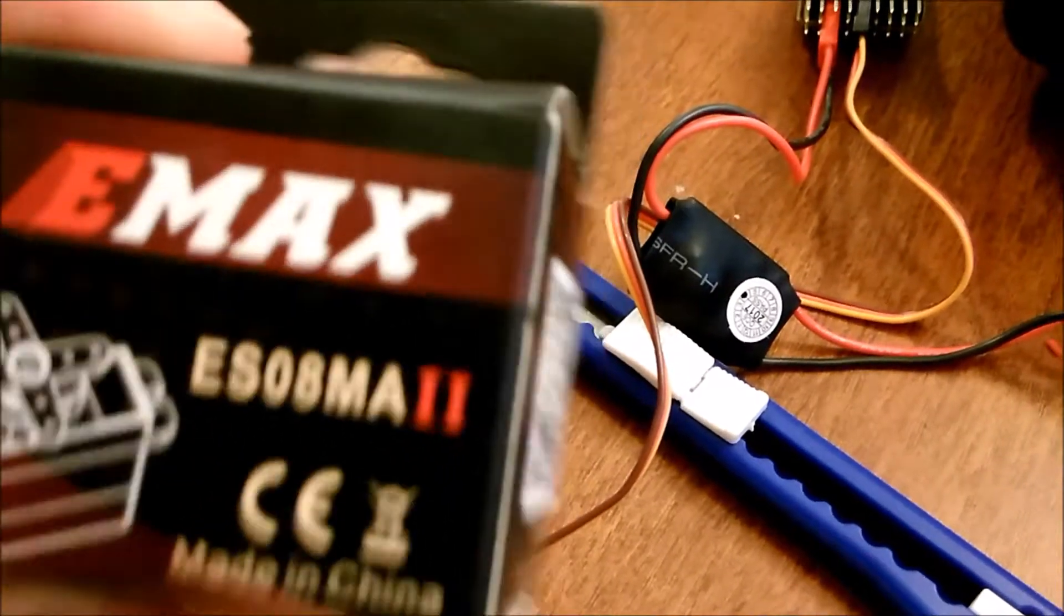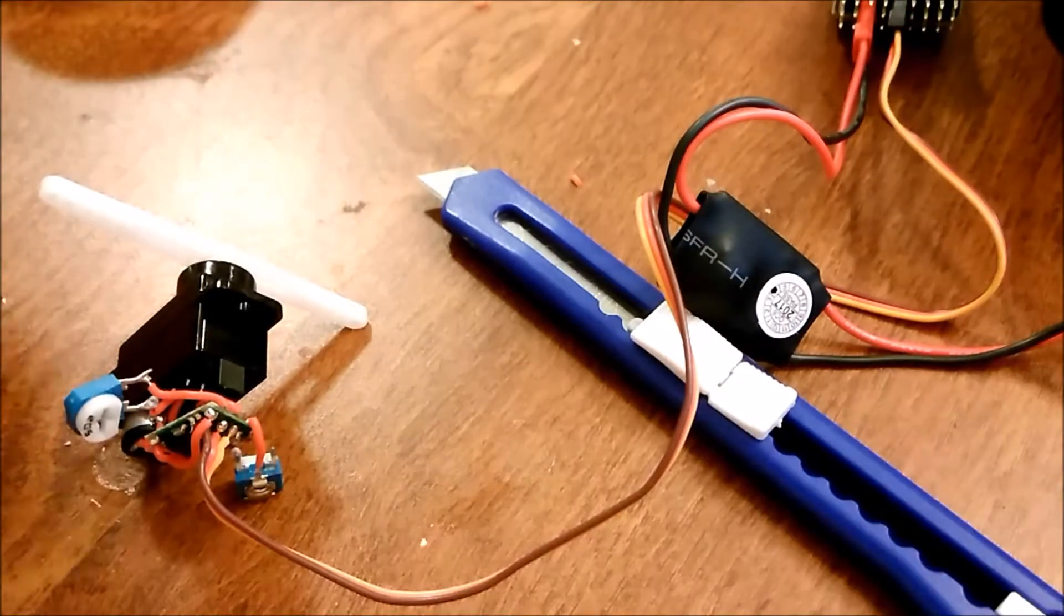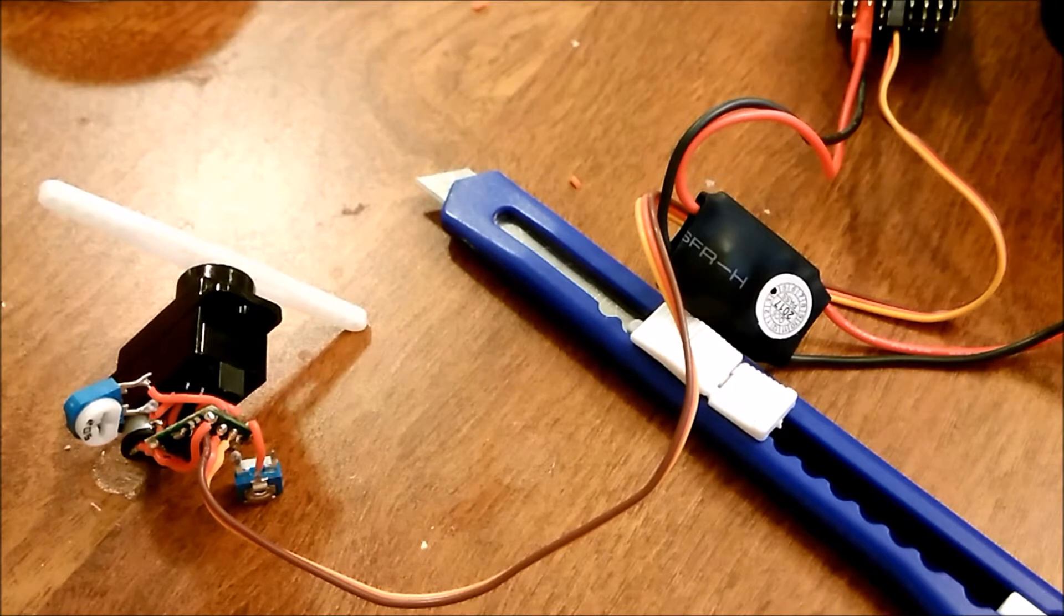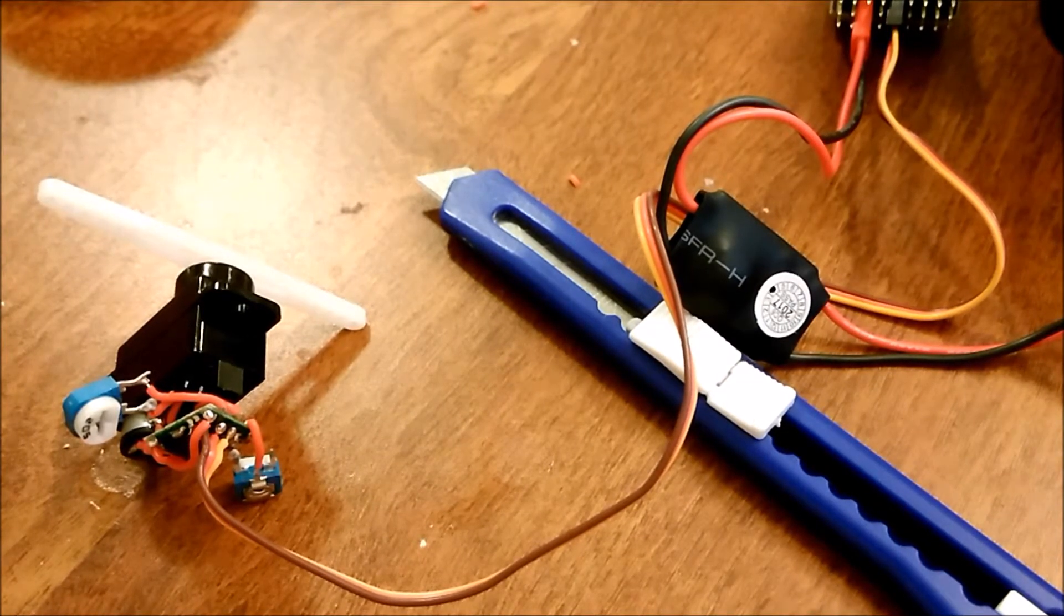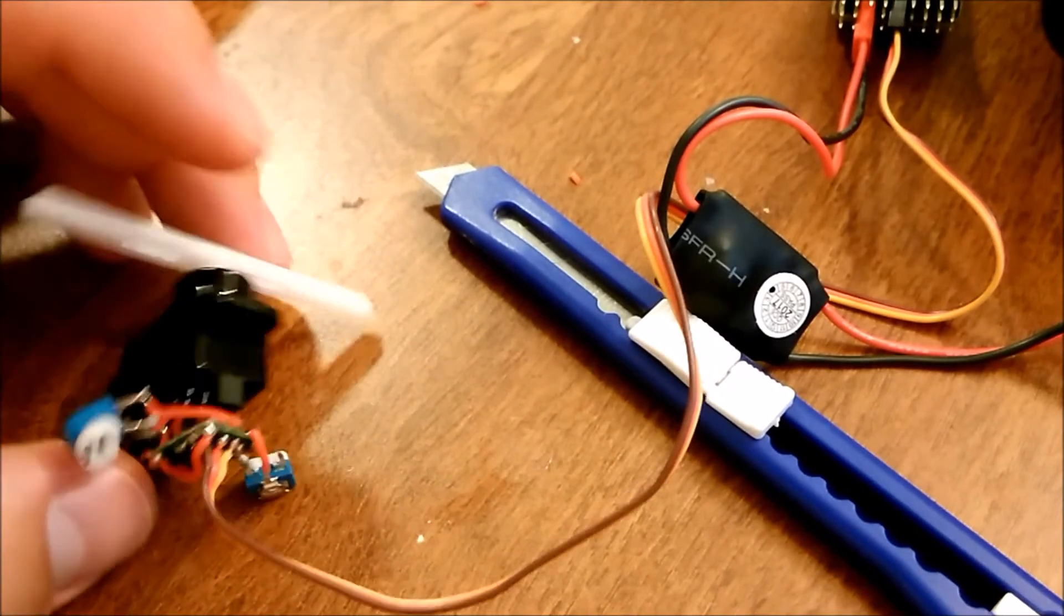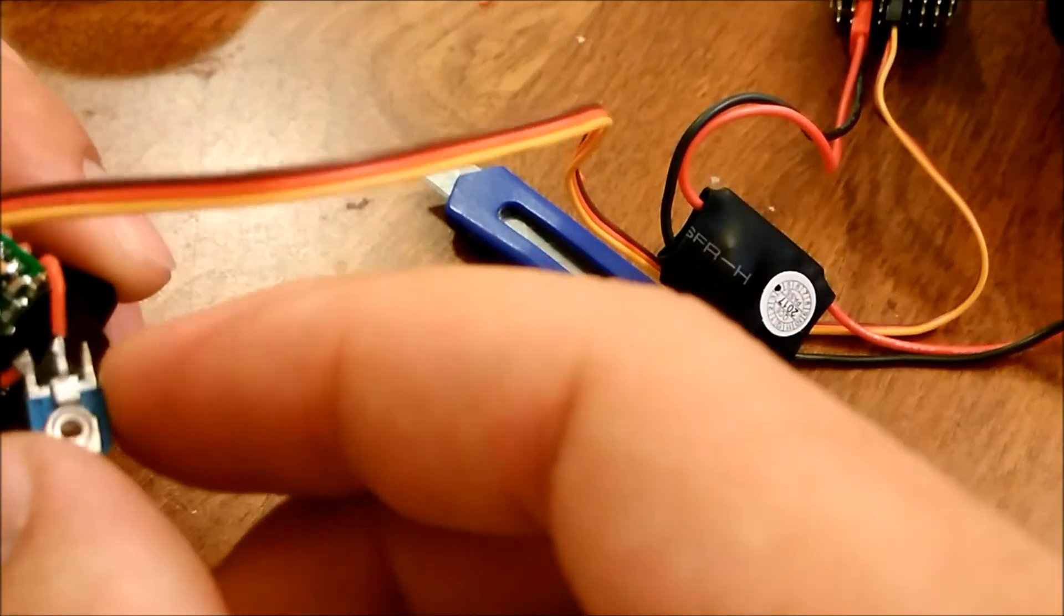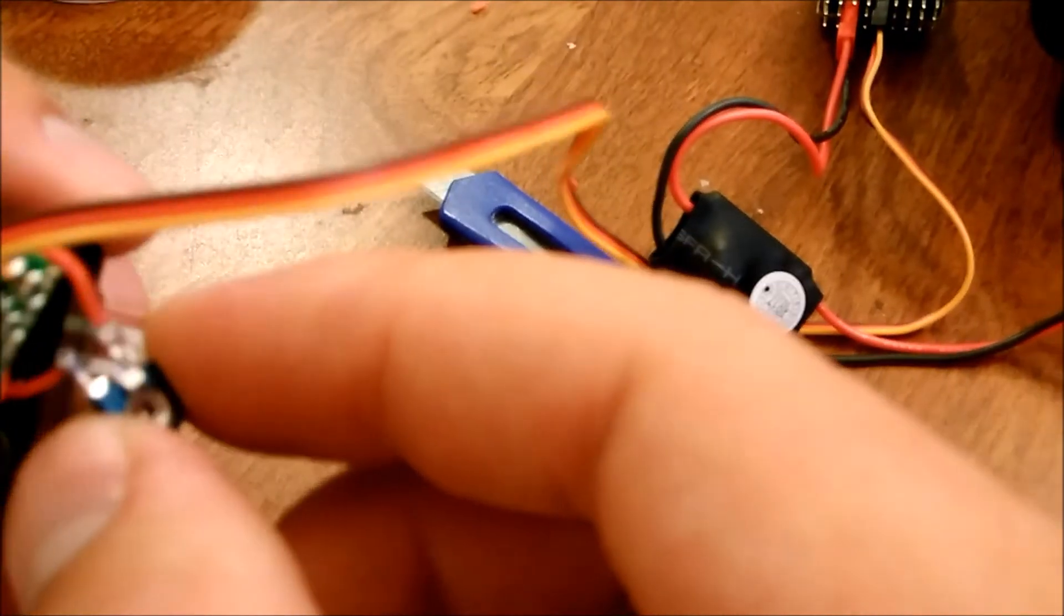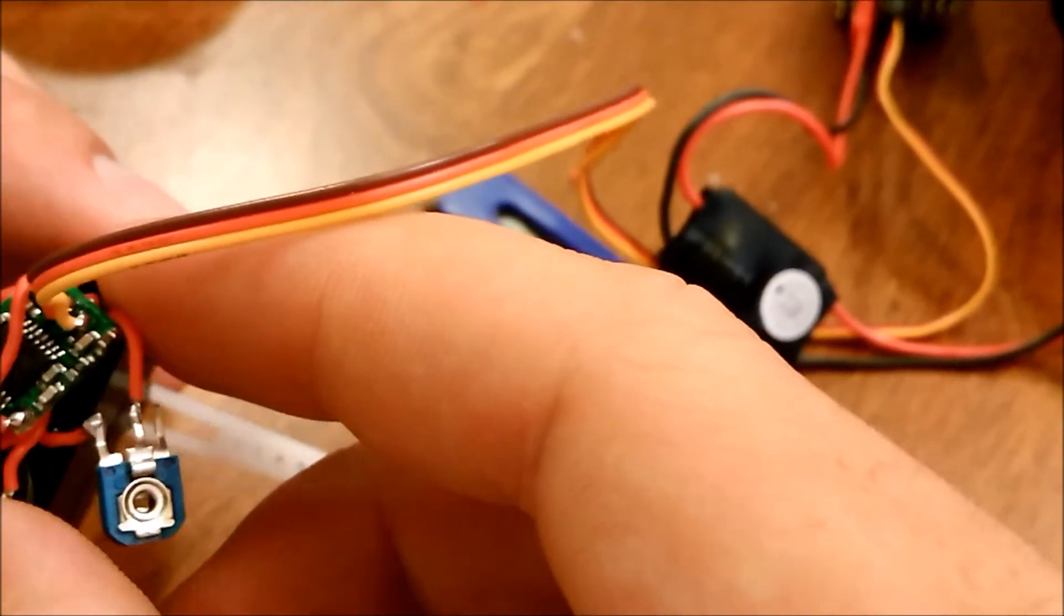Okay, so I have one of these Emax ES08MA2 servos, and I was reading online how to increase the travel to 180 degrees. Everyone said to put 2K resistors in line with the potentiometer, but I decided to get some little 5K potentiometers and put them in line instead, so I'm going to see how far it can be stretched before bad things start happening.